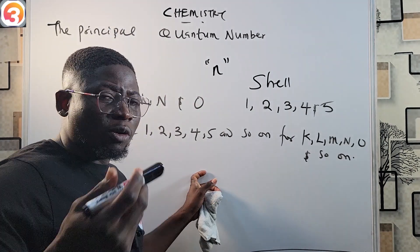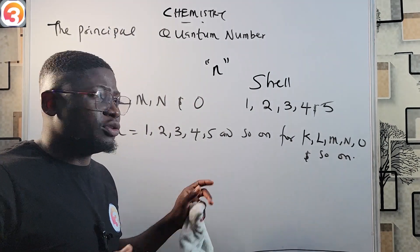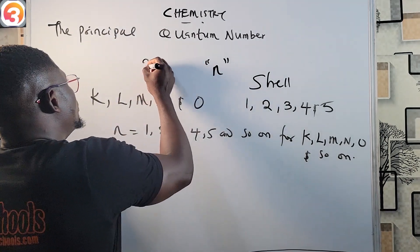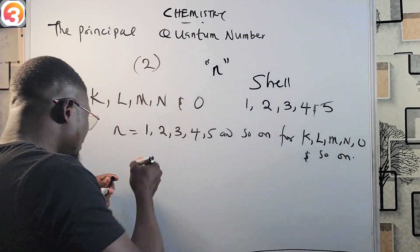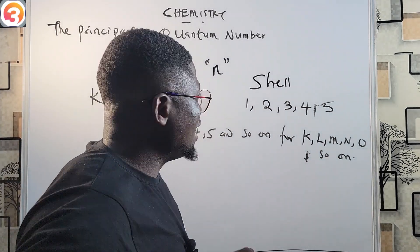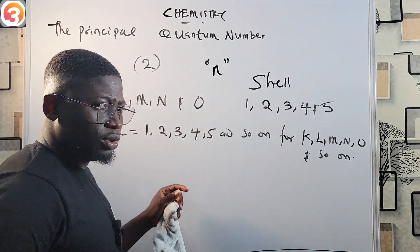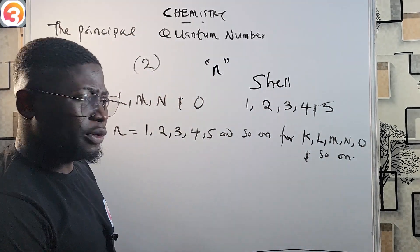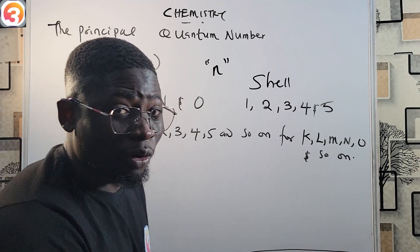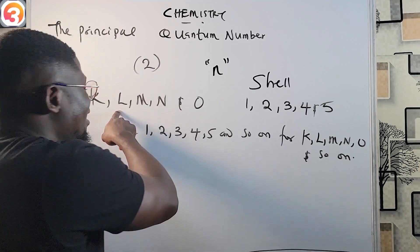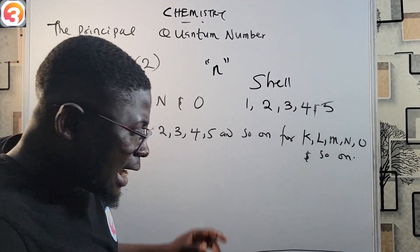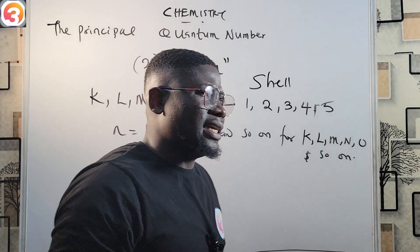For example, if we are told that the principal quantum number of an electron is 2, it means that it resides in the L shell. It's as simple as that.